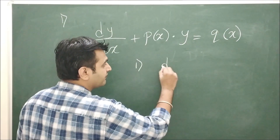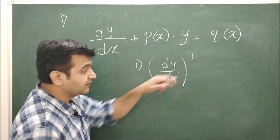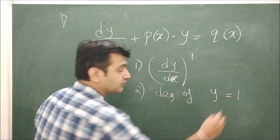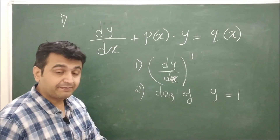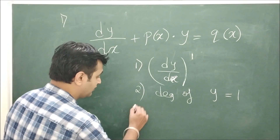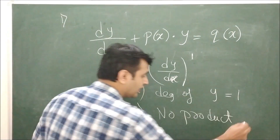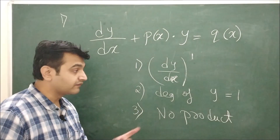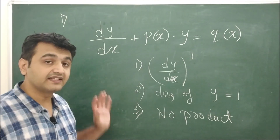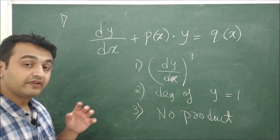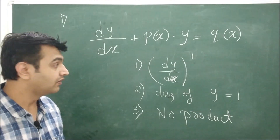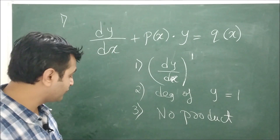To summarize: the degree of dy/dx should be one, the degree of the dependent variable y should be one, and there should be no product of the dependent variable and the derivative. When all three conditions are satisfied, we call it a first-order linear differential equation.